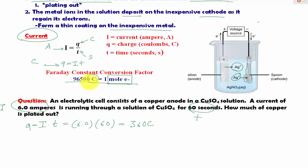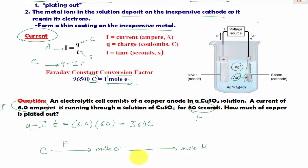Once we find coulombs, we can now solve for moles of electrons. Let's look back at the problem and describe the general direction we are going to take. We really need to know coulombs because coulombs is the only one that gives us a relationship to moles. So once we have coulombs, we can find moles of electrons using the Faraday constant. Once we find moles of electrons, we can solve for moles of the metal using the mole ratio.